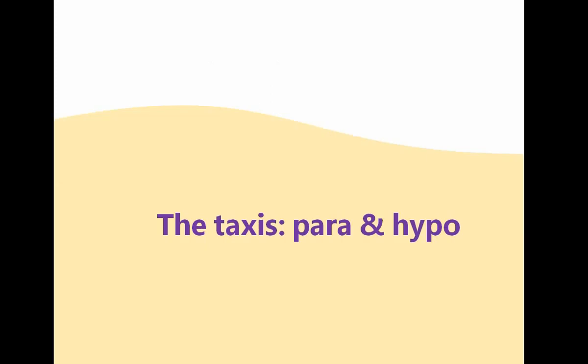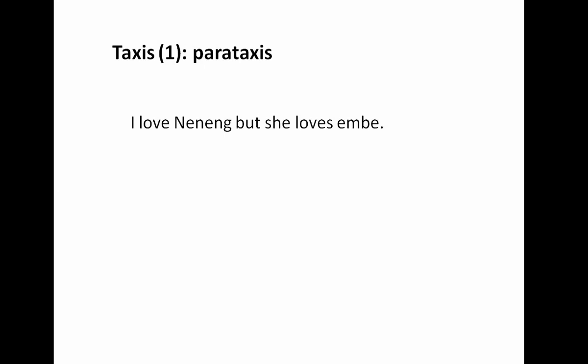Taxis is divided into two: parataxis and hypotaxis. Parataxis, or the compound sentence, is combined using the conjunctions for, and, nor, but, yet, so — what we call in writing class the FANBOYS. You may want to take a look at your first semester handout on writing. In functional grammar, such a sentence has two clauses. For example: 'I love Neneng but she loves Mbe.' Before labeling the taxis, let me explain how to label the clauses.